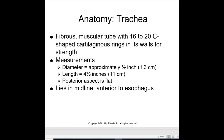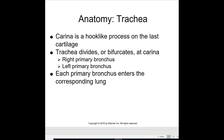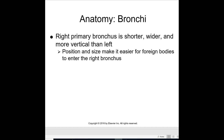The trachea is a fibrous muscular tube with 16 to 20 C-shaped cartilage rings in its walls for strength. Its diameter is approximately half an inch or 1.3 centimeters, and its length is four and a half inches or 11 centimeters. The posterior aspect is flat, lies in the midline, and is anterior to the esophagus. The carina is a hook-like process on the last cartilage where the trachea divides or bifurcates, separating into the right and left primary bronchi. Each primary bronchus enters the corresponding lung. The right primary bronchus is shorter, wider, and more vertical than the left, making it easier for foreign bodies to enter.